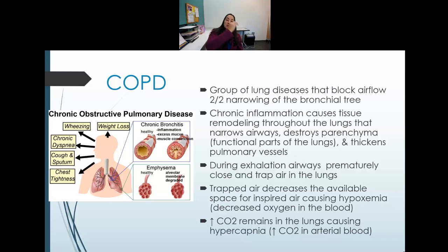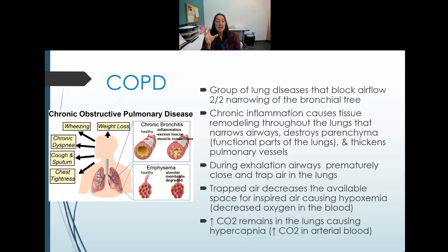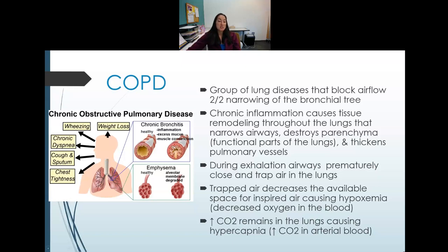Chronic obstructive pulmonary disease (COPD) is a group of lung diseases that block airflow because the bronchioles are narrowed. Chronic inflammation remodels the lung tissues, narrowing the airways. The parenchyma — the functional portions of the lung where oxygen exchange occurs — is damaged, and pulmonary vessels thicken, further restricting airflow.